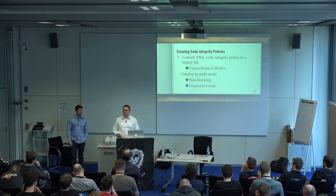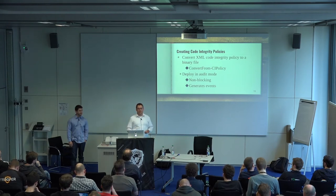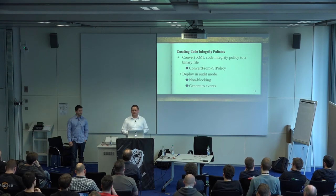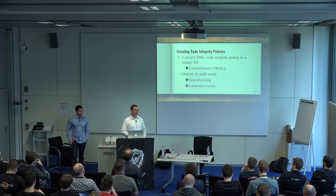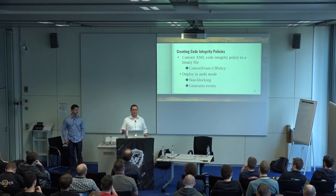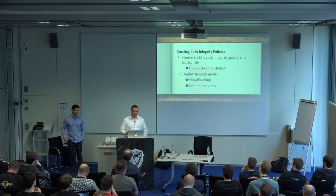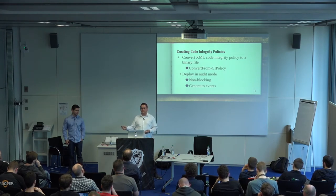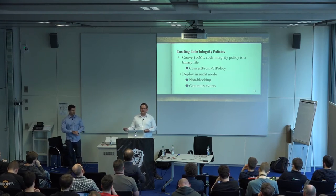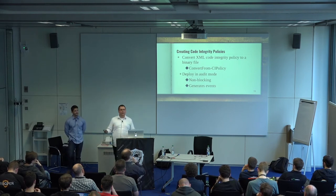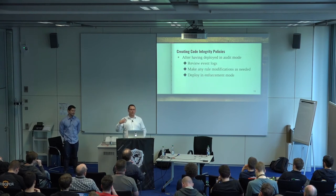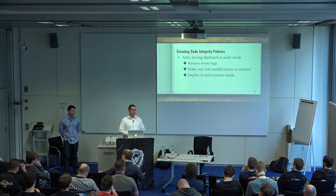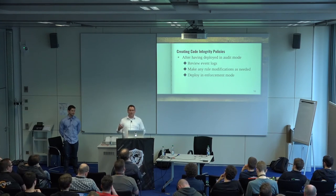The recommended approach when developing code integrity policies is to not immediately start enforcing, because you might have missed something that someone in your business needs. If you enforce the policy it's going to block them and nothing will get done. However, in audit mode, Device Guard will create an event in the Windows Event Log saying this binary was attempted to run and should have been blocked, but because it's only audit mode, it's just generating an alert. You can then look at those events and figure out whether you actually trust any of the applications that would have been blocked.